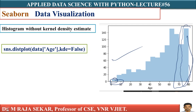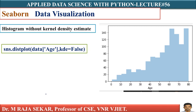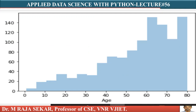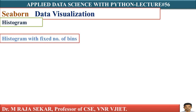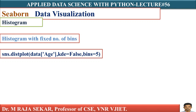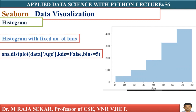You can also control how many bins you want in the plot. By controlling the number of bins, you can quickly interpret the distribution of the age variable. You can specify the number of bins using the bins argument. This makes interpretation easier. Let's set bins equal to 5 and see the output.